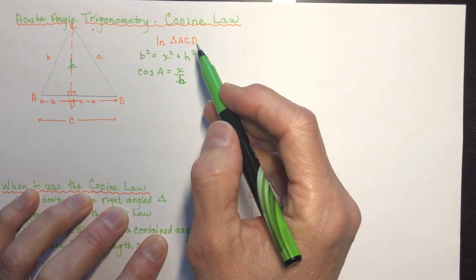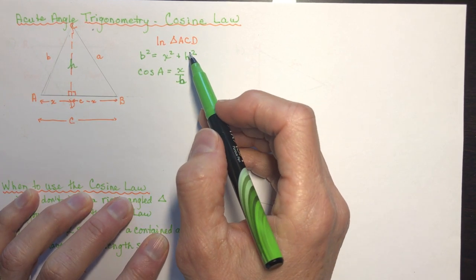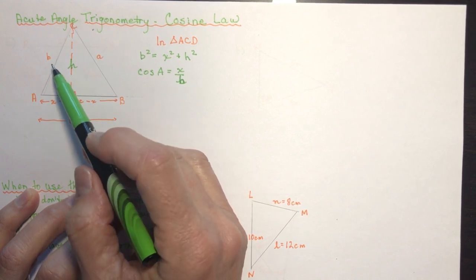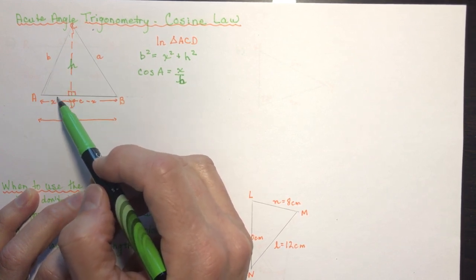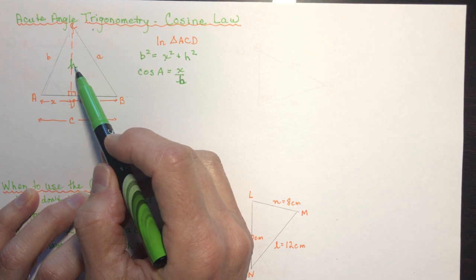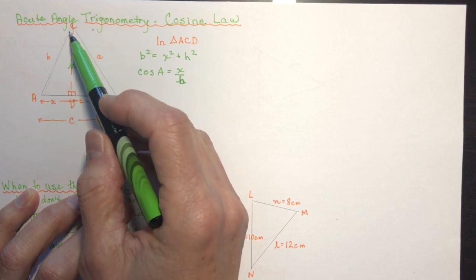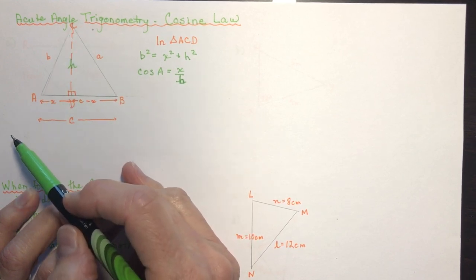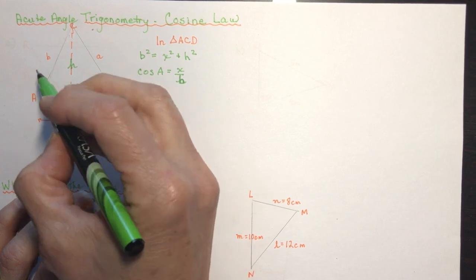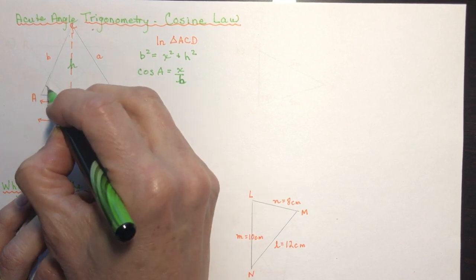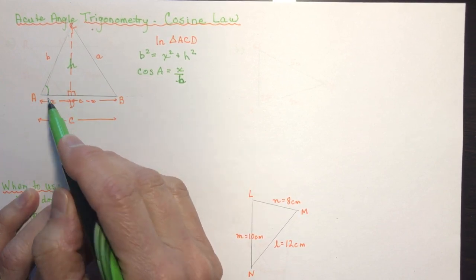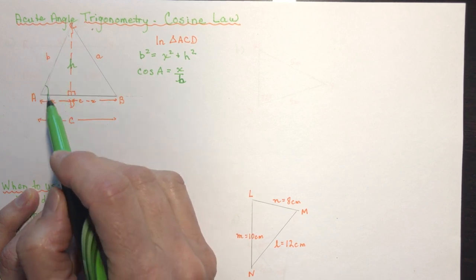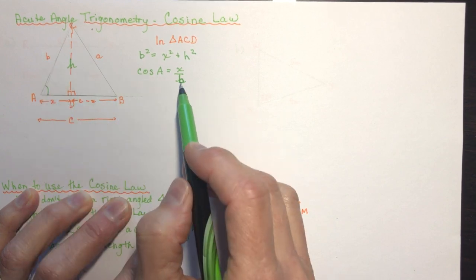In triangle ACD, using the Pythagorean Theorem: b squared equals x squared plus h squared. The cos of angle A is adjacent over hypotenuse, which in this case is b — adjacent being x and hypotenuse being b.